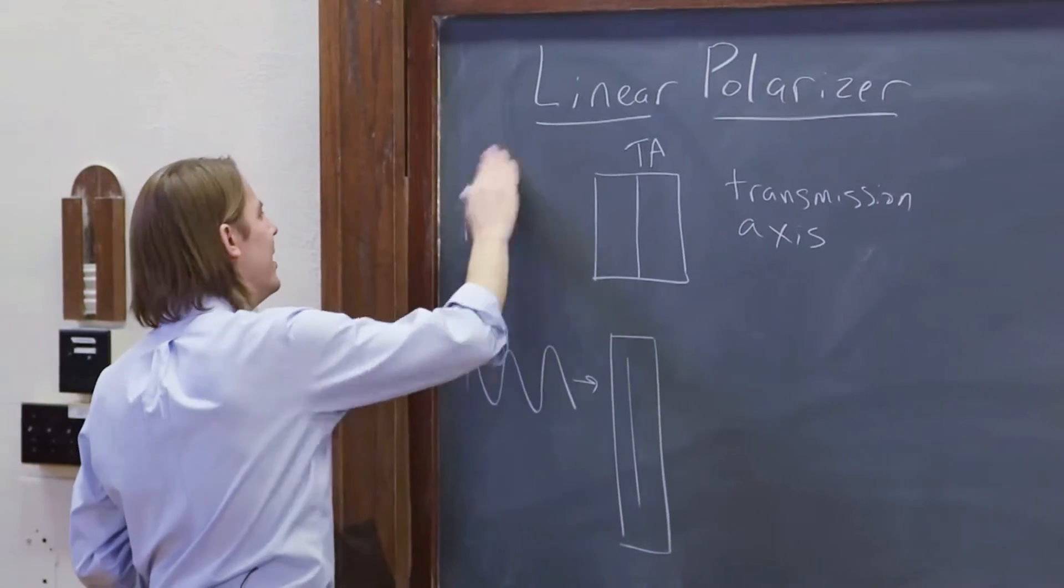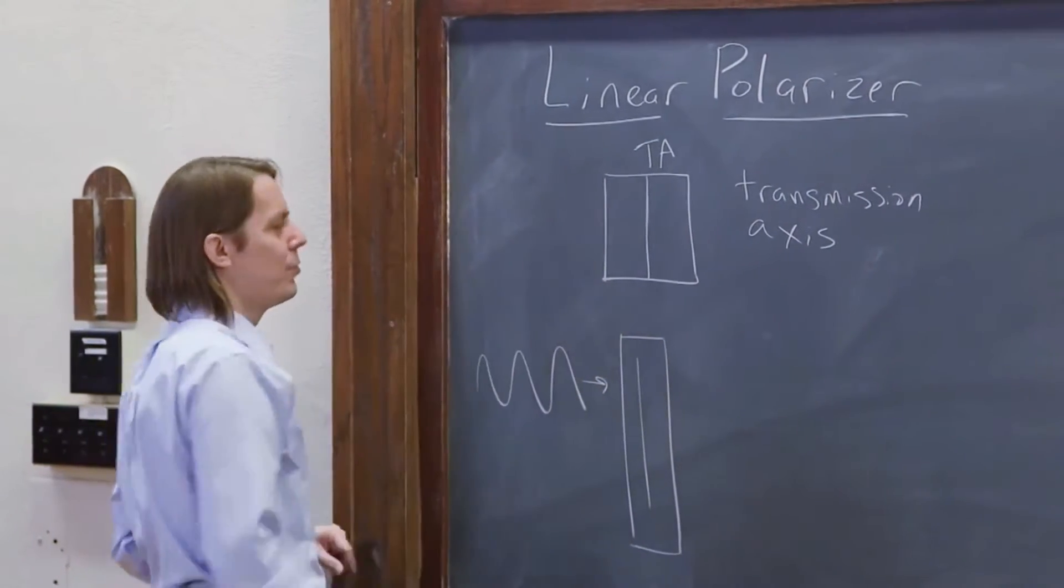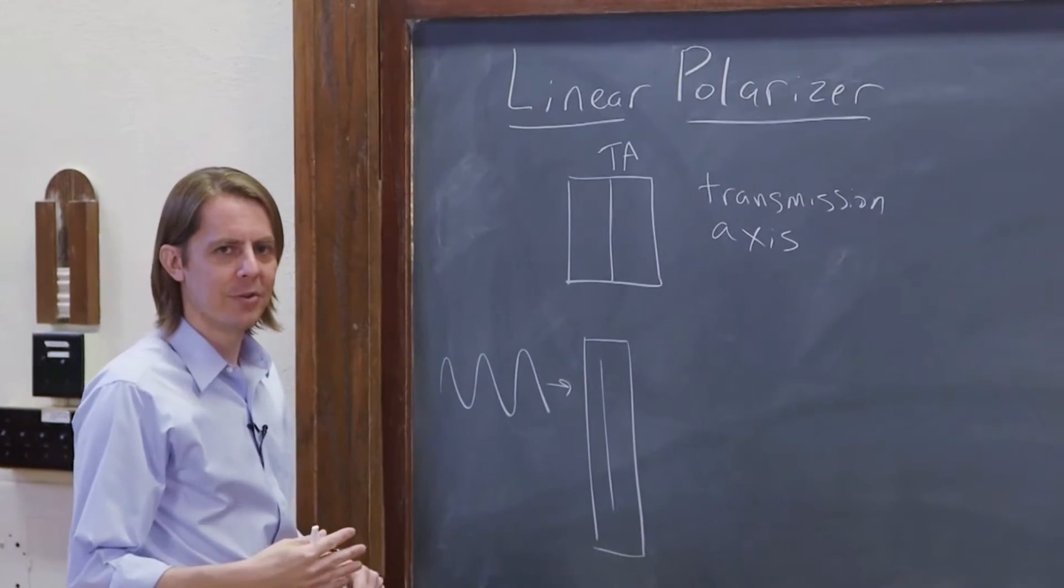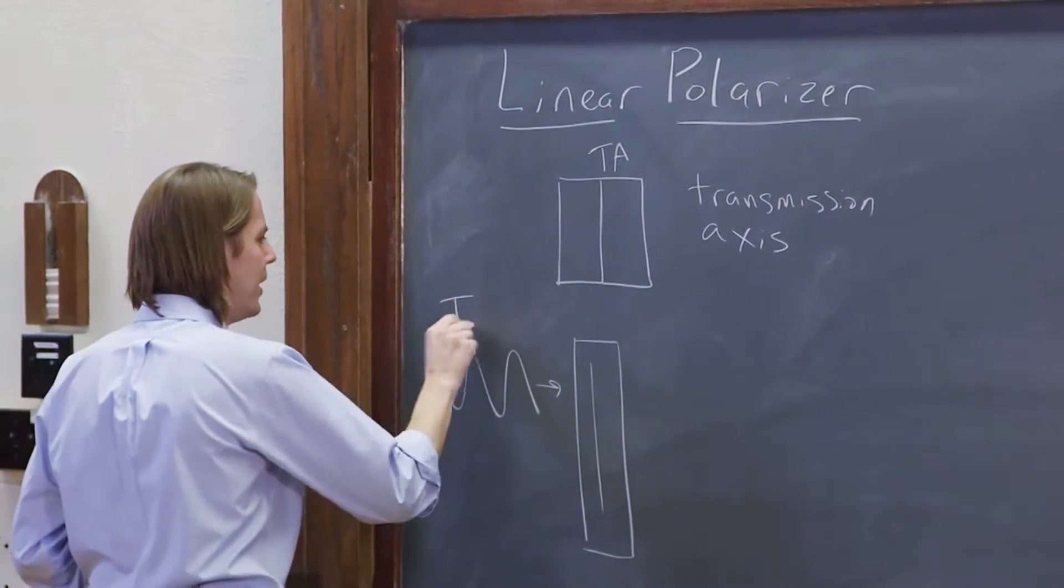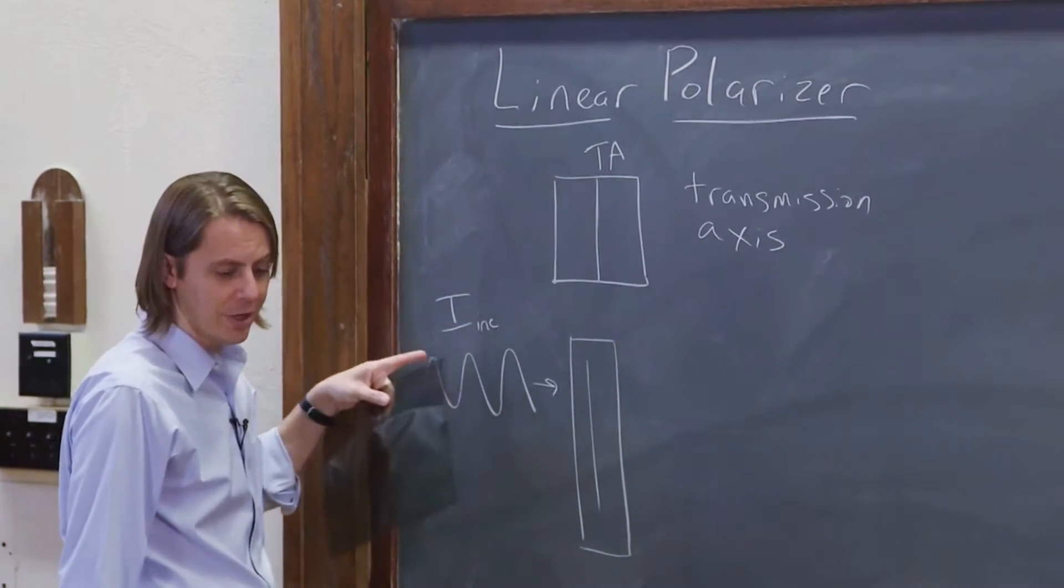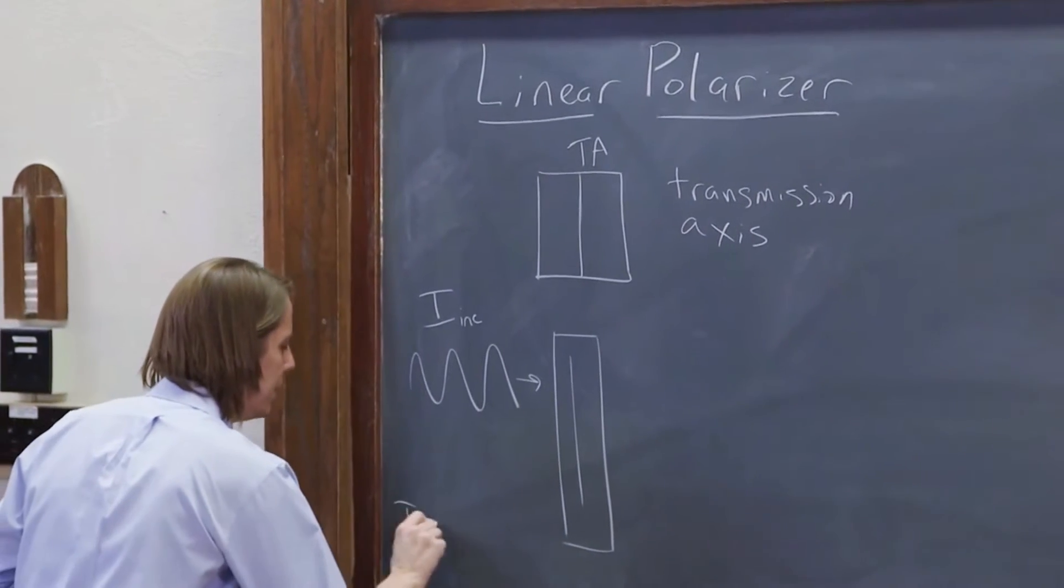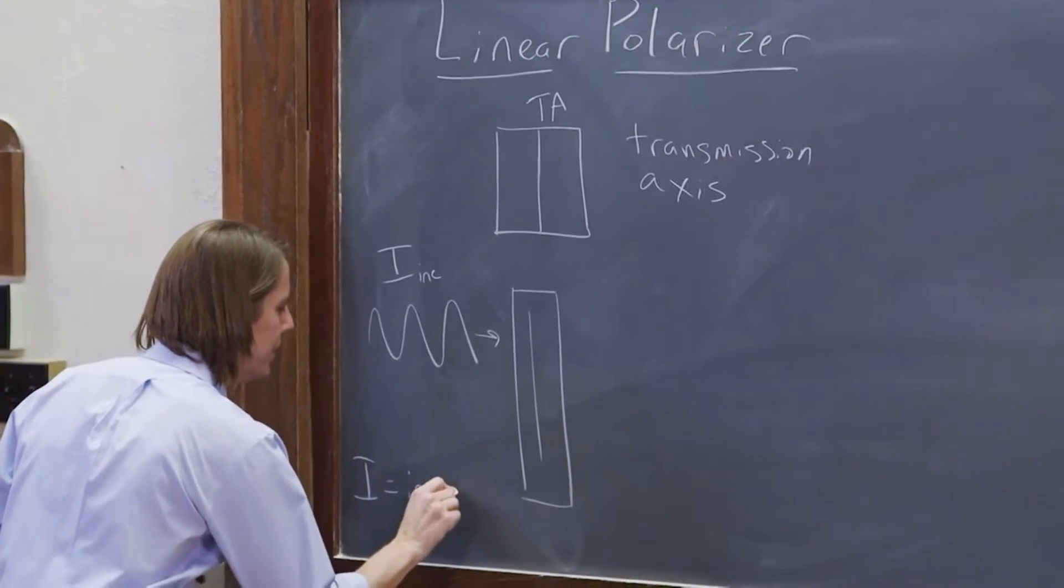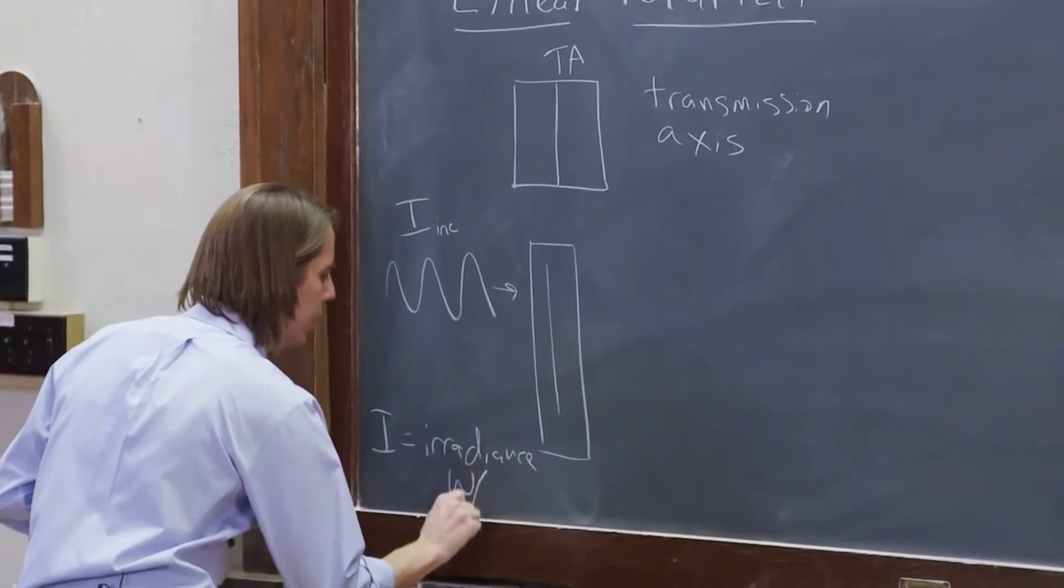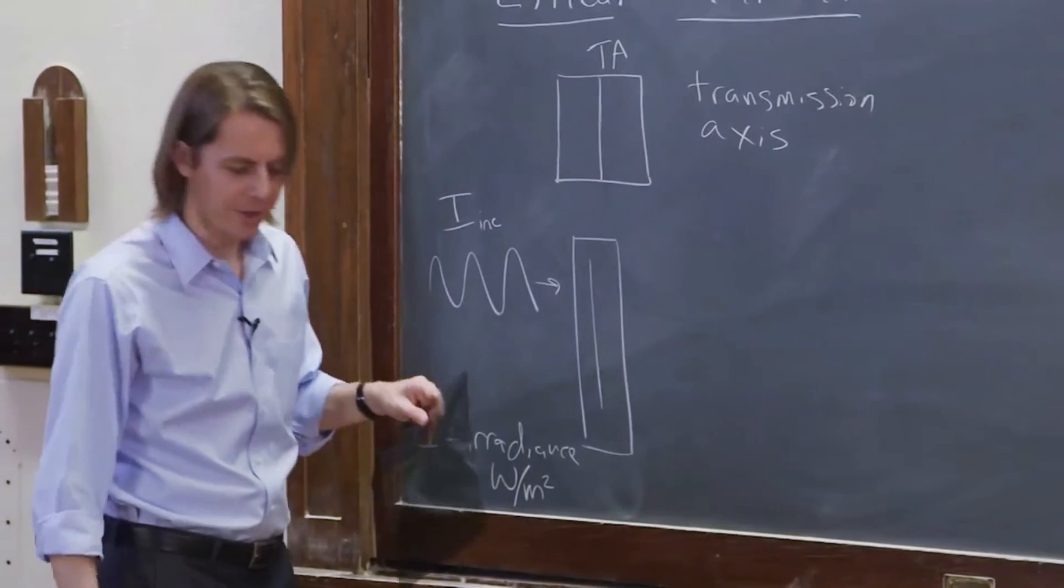I'm now going to give in and go the optics route and call irradiance I because EE becomes very cumbersome and it looks just like the electric field. So I'm going to call this I incident, and by that I mean irradiance in watts per meter squared. I equals irradiance for now on in watts per meter squared for the rest of the class.